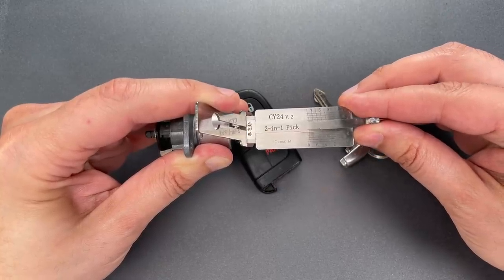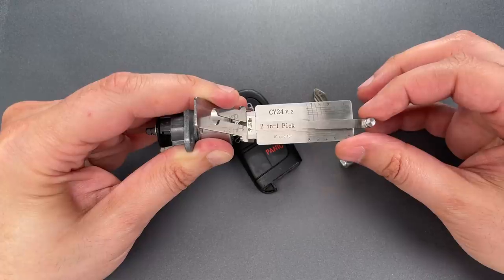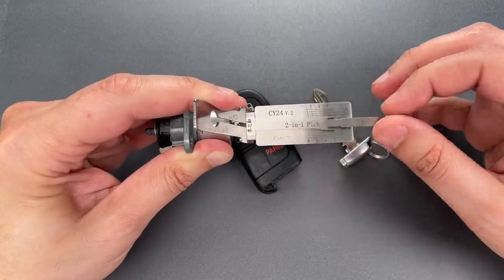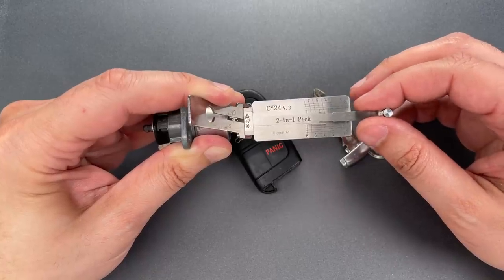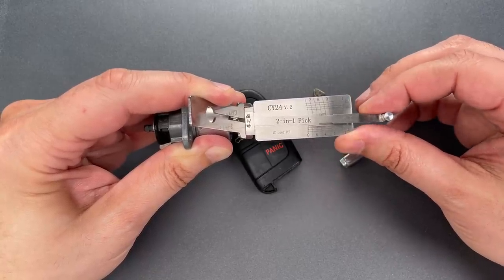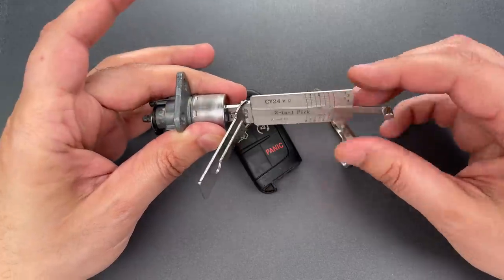7 is binding tightly, nice click there, little click out of 8, 2 feels set, click out of 3, 4 is binding, click out of 4, and we got this open.